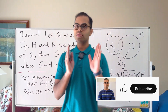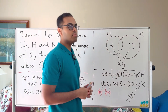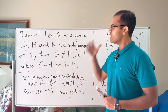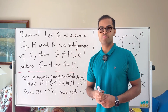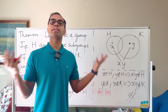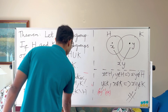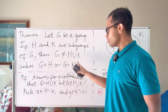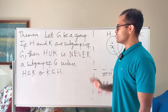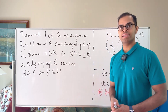To end, here's the beautiful corollary, very familiar from linear algebra. The statement is: let G be a group; if H and K are subgroups of G, then H union K is never a subgroup of G unless H is contained in K or K is contained in H. This mirrors the analogous result for subspaces of a vector space.